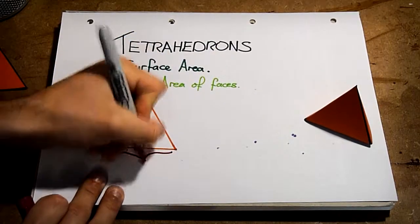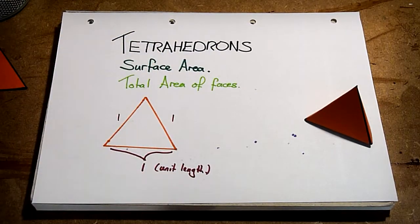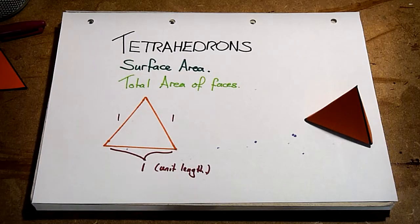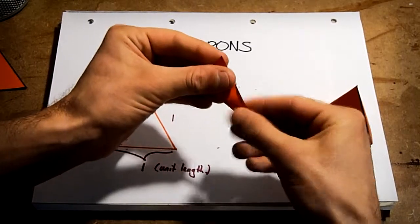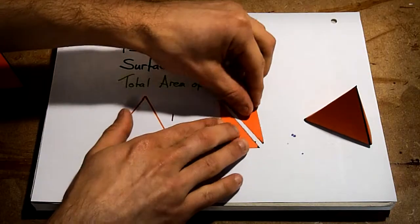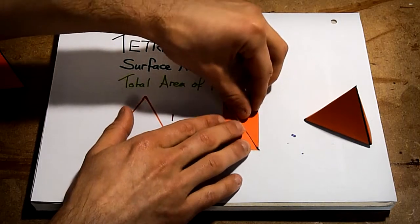Say each triangle has side length 1. In order to work out the area of this, we can think about cutting the triangle down the middle and placing them like this in order to make a rectangle.